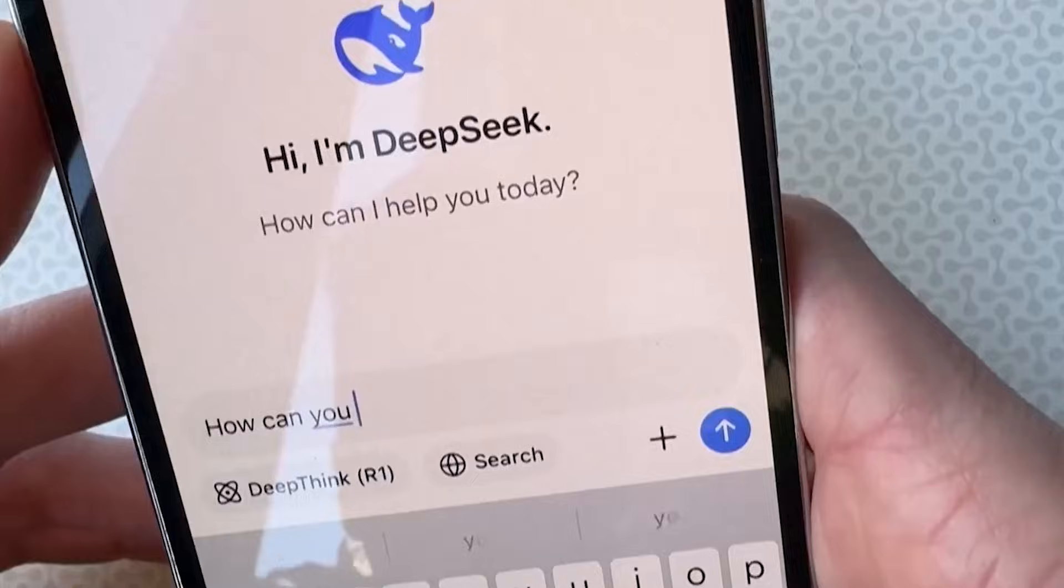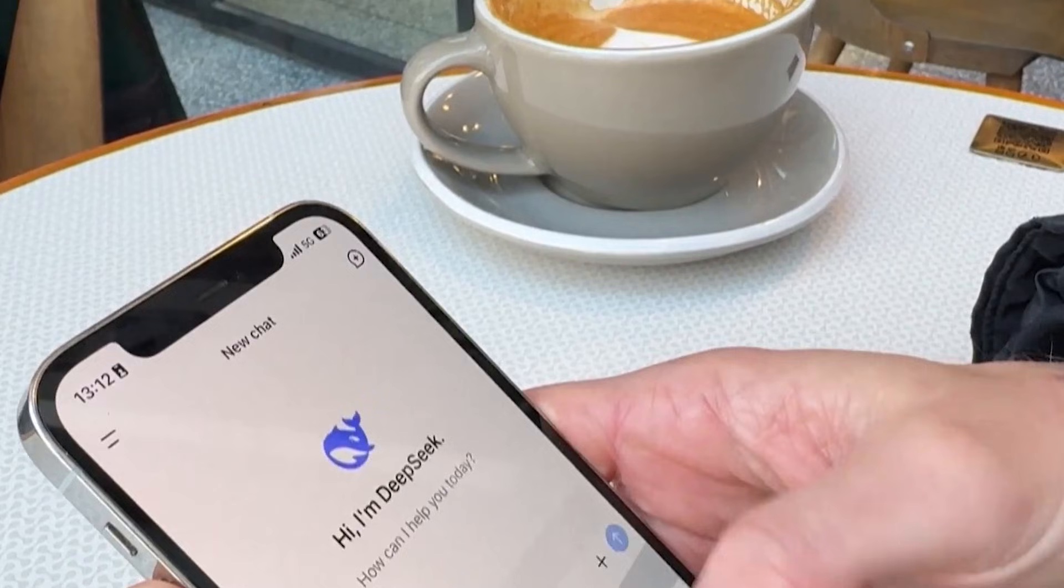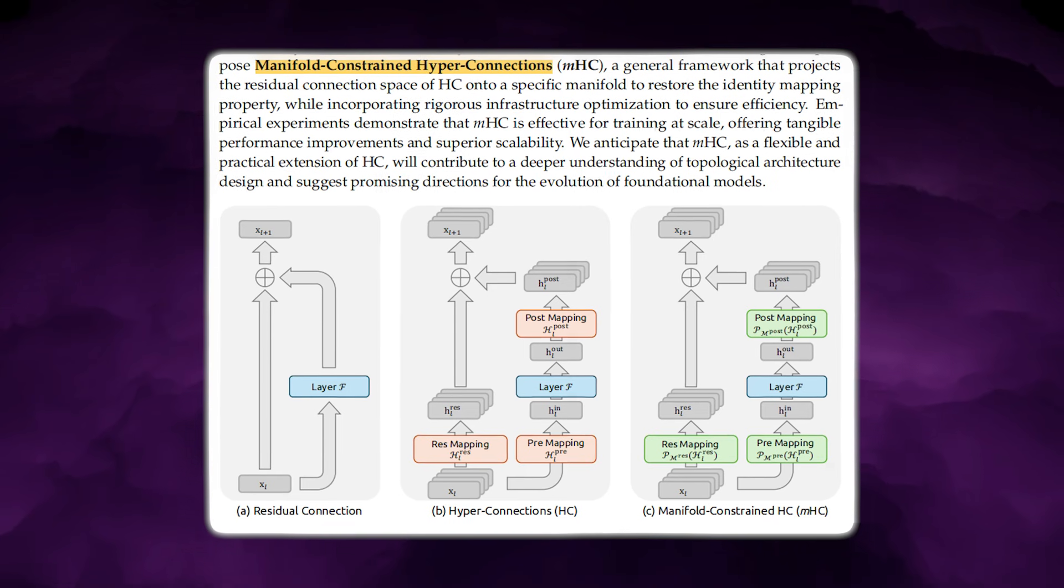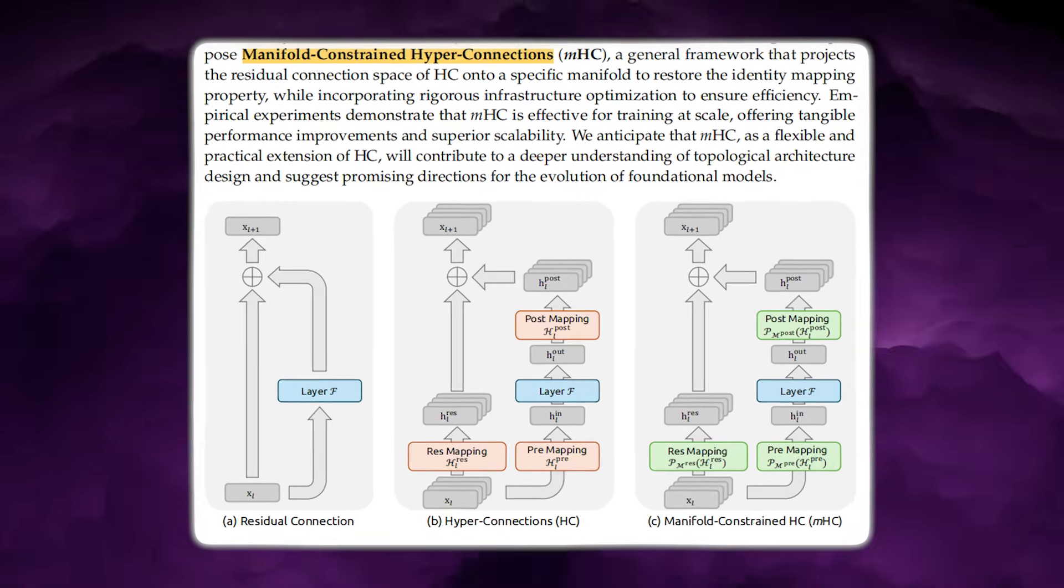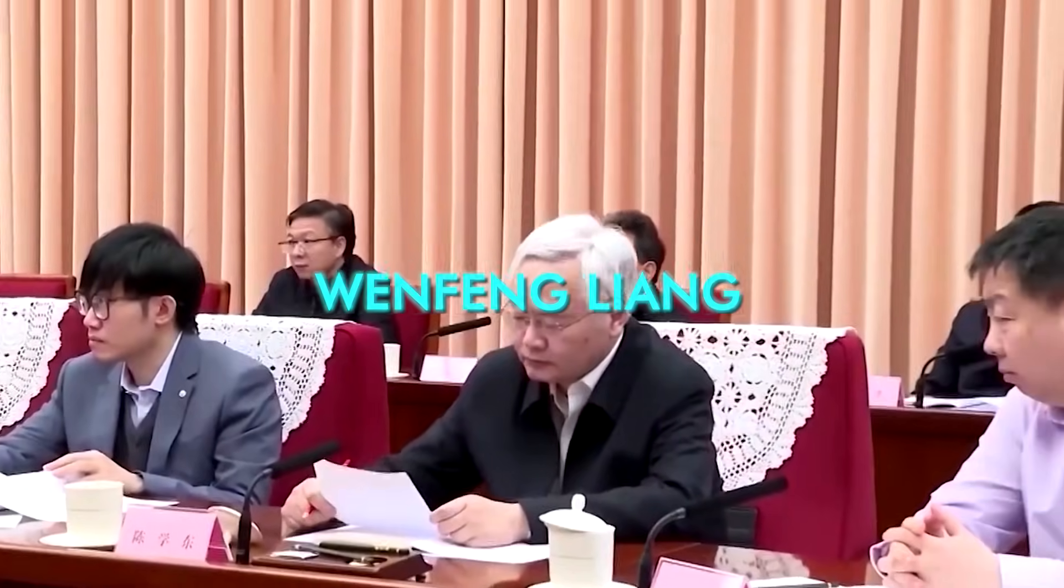We're talking about the internal wiring that keeps large language models from blowing up mid-training or collapsing into useless gradients. The fix they propose is called MHC, Manifold-Constrained Hyper-Connections, and most shocking part, CEO Wenfang Liang is on the author list.